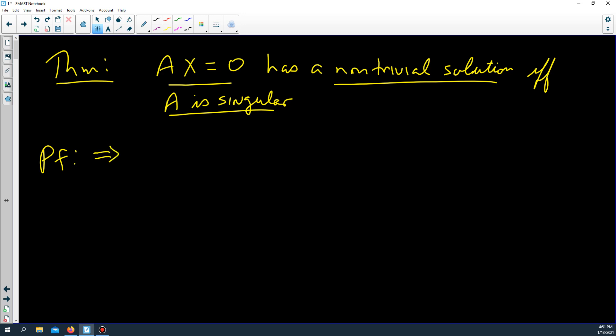So let's go in the forward direction. Let's write down what we want to show. Well, Ax equals 0 has a non-trivial solution that implies that A is singular. Now, to be honest,